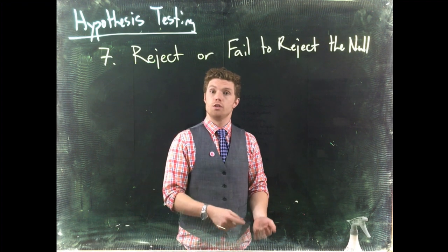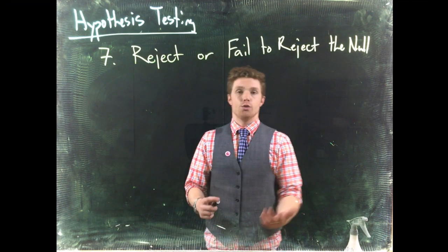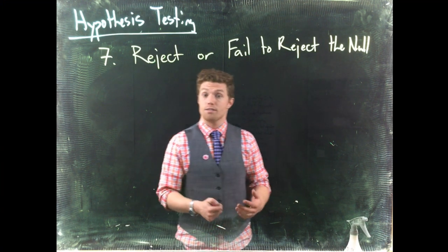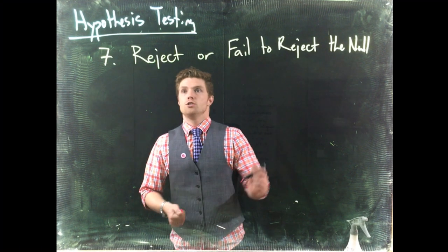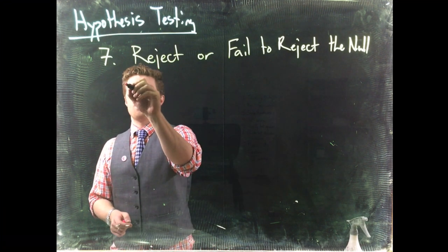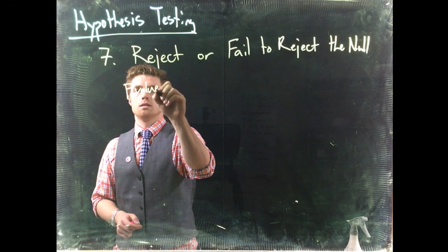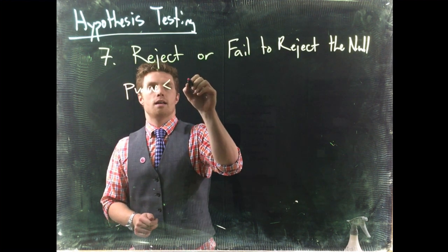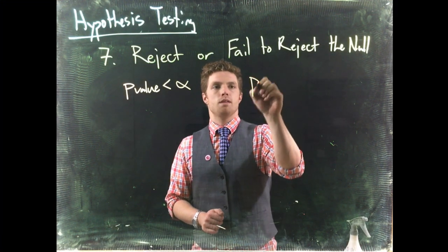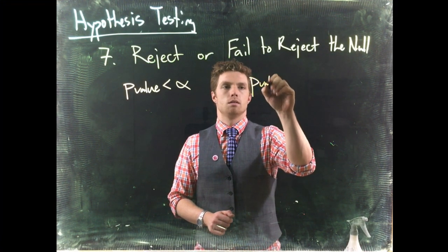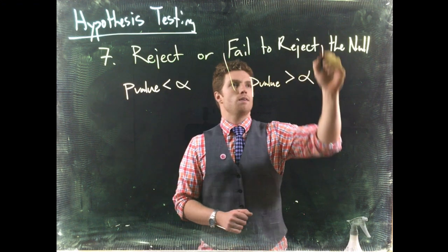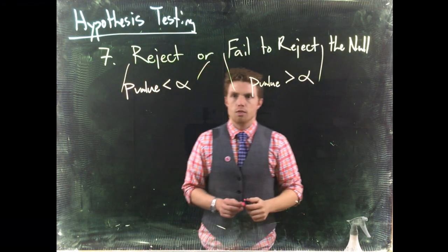What we do not say is that we prove the null hypothesis. We're not proving anything with our hypothesis testing. Rather we're saying we've collected enough data or evidence to suggest one way or the other. So we reject the null hypothesis based on a condition. If our p-value is less than our alpha we reject the null hypothesis. Now if our p-value is greater than alpha we fail to reject.